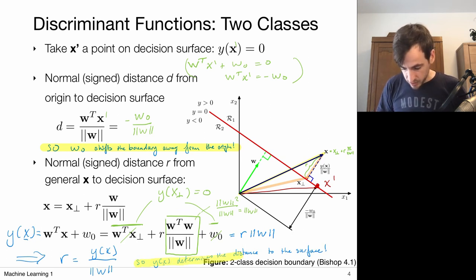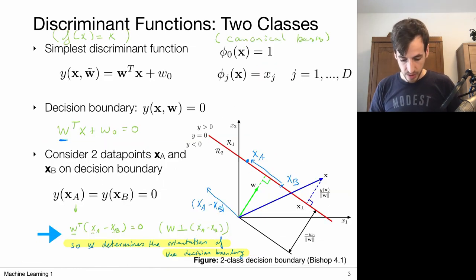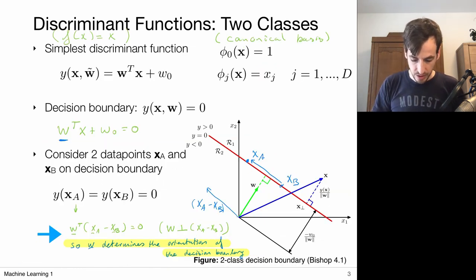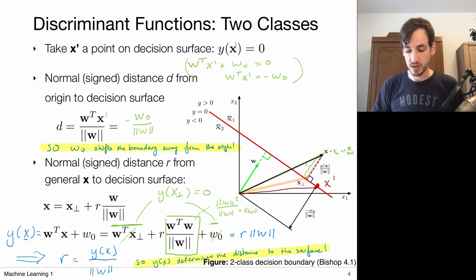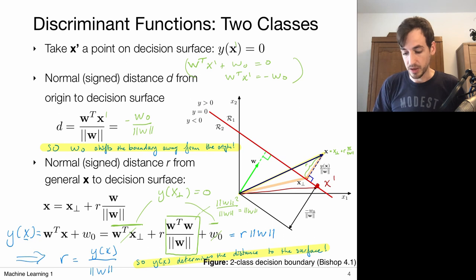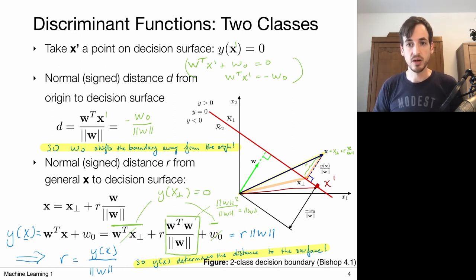In summary: W defines the orientation of the hyperplane; W₀ the bias term determines the distance of the hyperplane to the origin, shifting it away with larger W₀; and y(x) itself, when evaluated at any point, tells us the distance of that point to the decision plane.